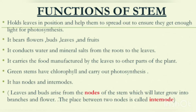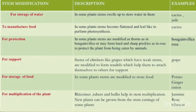The place between two nodes is called internode. Stem modification: For storage of water — in some plants, stems swell up to store water in them. Examples: Cactus, Jade.